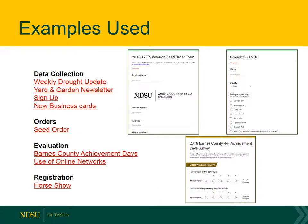Here are some examples — I took some screenshots of what people are using Google Forms for. In the top left, Brian over at the Agronomy Seed Farm used them for foundation seed orders. And for the last two years, we've been using the drought form, where we send it out weekly to agents to get their input on how the drought is doing in their counties, and then Adnan uses that information to report it to the drought monitor.